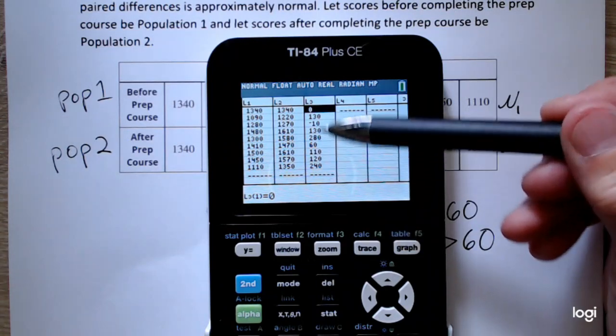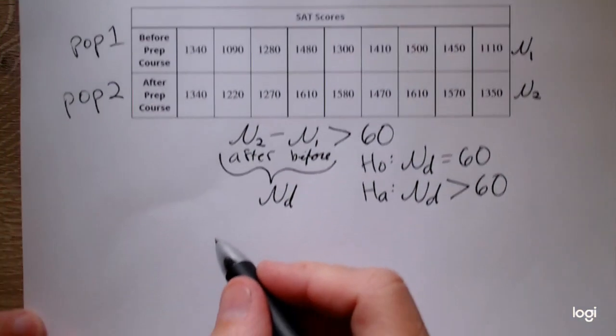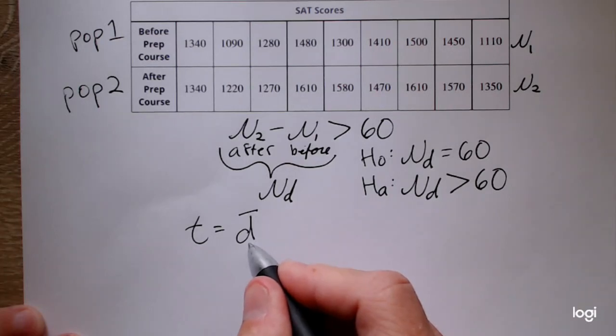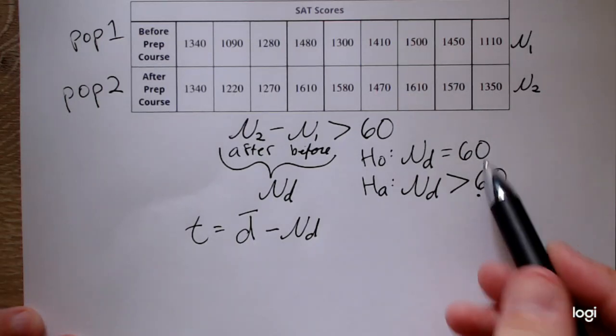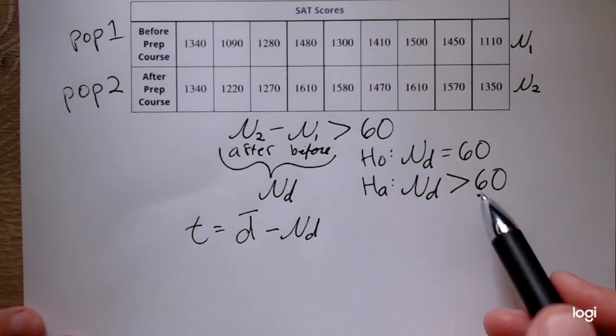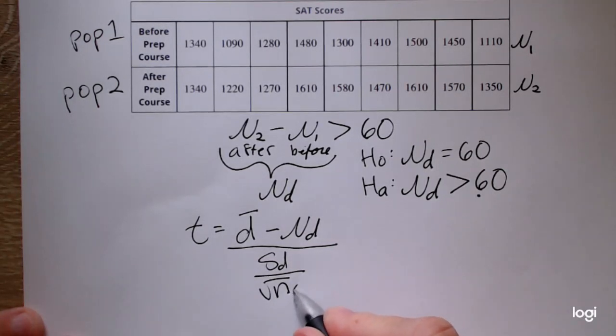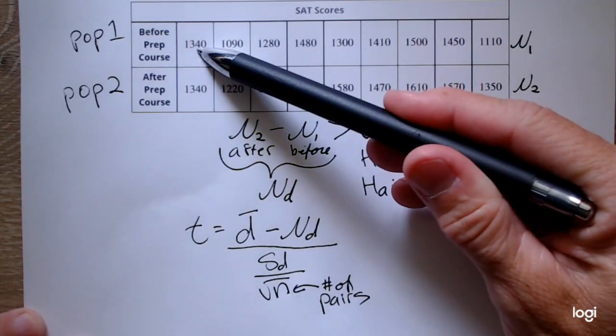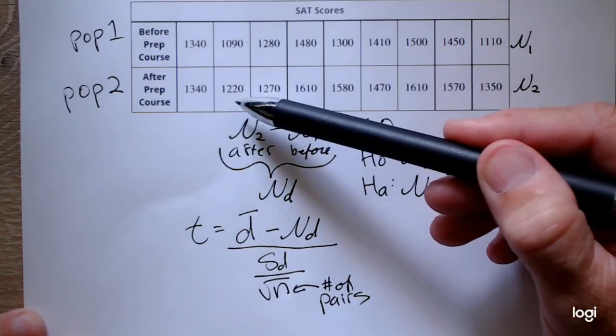This is what I'm going to run a single sample t-test on. The test statistic for the paired t-test is d bar, the sample mean of the differences, minus mu sub d, the claimed difference or the hypothesized difference. Again, for a lot of the problems you'll run across, that will be 0. Over the standard deviation of the differences over square root of n, where n is the number of pairs. So I have 9 pairs of data here. You can think of these as ordered pairs. This 1340 goes with this 1340, this 1090 goes with this 1220. So the order matters here. You don't want to mix these up when you're inputting them into the calculator.